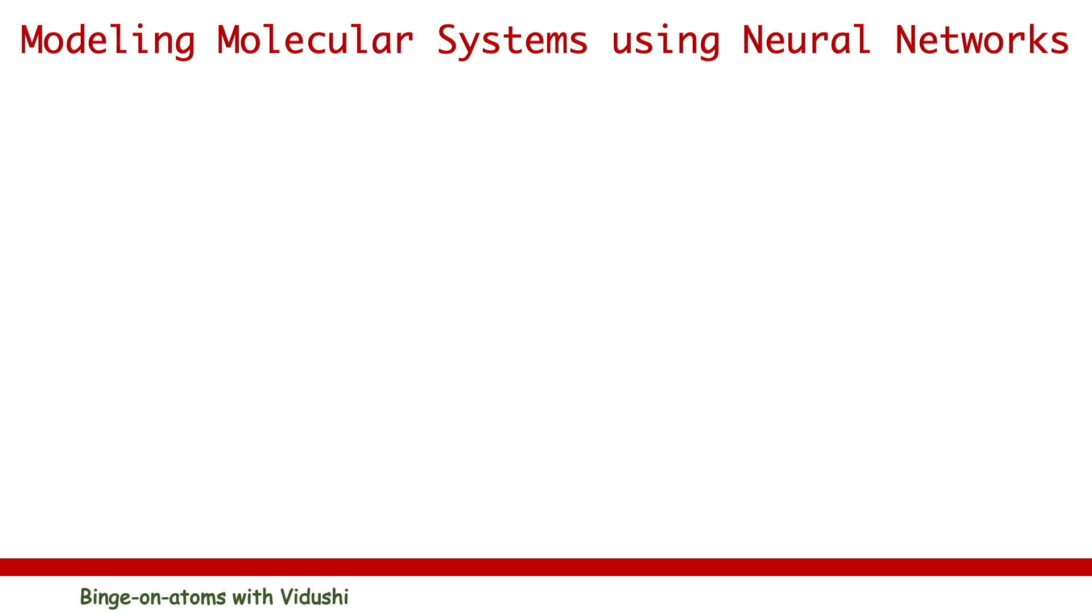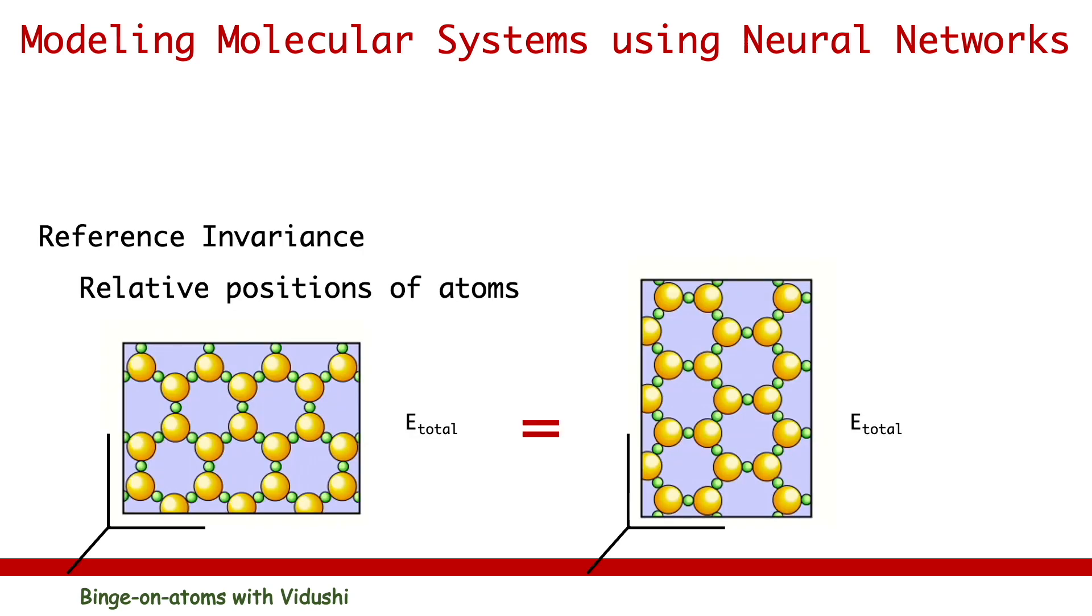Let's speak of some of the important assumptions for molecular systems. First, reference invariance. Predicted property of molecular system should be invariant to the trans-rotational transformation of the system coordinates. Here, the relative positions of the atoms should matter. Atom positions with respect to each other should matter rather than the absolute positions from the reference point.